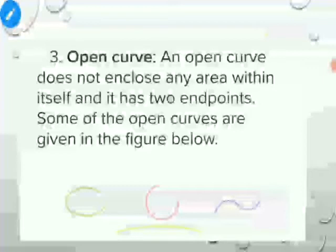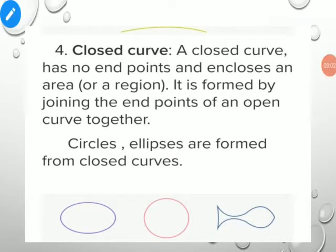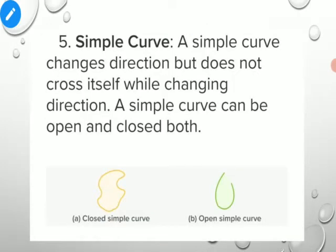The types of curves: an open curve does not enclose any area within itself — it has two end points. Curves which have different starting and ending points are called open curves. A closed curve does not have end points and encloses an area or region. It is formed by joining the end points of an open curve together. A closed curve is a curve which does not have a starting or end point. Circles and ellipses are formed from closed curves.